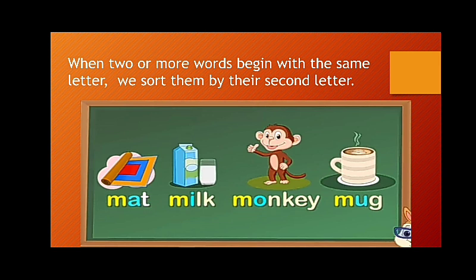The first word is mat, the second word is milk, the third word is monkey, and the fourth word is mug. In these words, all the second letters are considered to keep the words in alphabetical order.